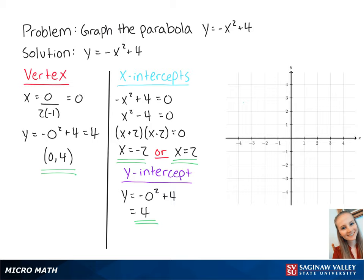The vertex and the y-intercept are the same point at (0, 4). The x-intercepts are at (-2, 0) and (2, 0).